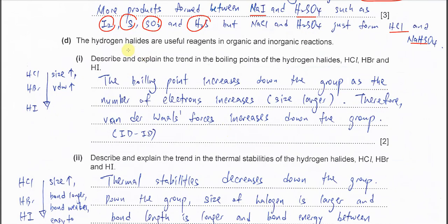Part D. Hydrogen halides are useful reagents in organic and inorganic reactions. Part 1. Describe and explain the trend in the boiling point of HCl, HBr and HI. We know that when down the group, size of this halogen is larger. When size larger means the molecule is larger. And of course, more electrons now, it has greater Van der Waals forces. So when down the group, boiling point will increase.